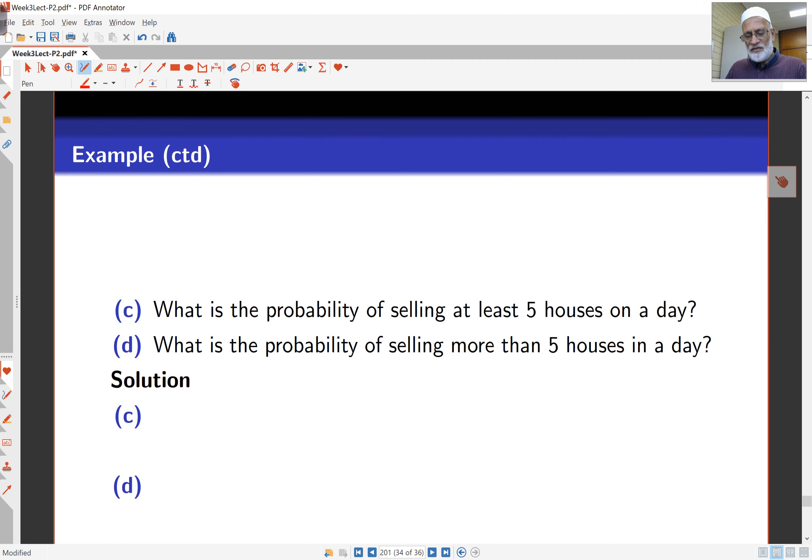Now here is the probability of selling at least 5 houses on a day. At least 5 houses means the probability of X being greater than or equal to 5. At least 5. So that's 1 minus the probability of X less than or equal to 4.